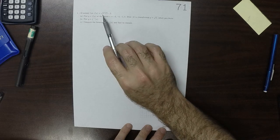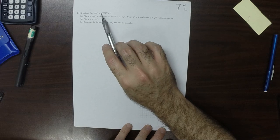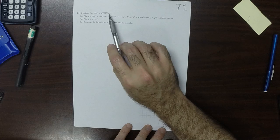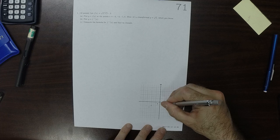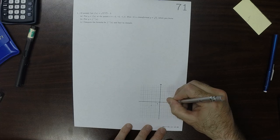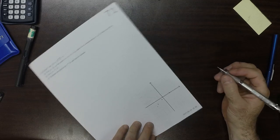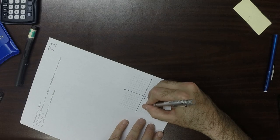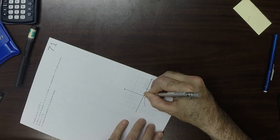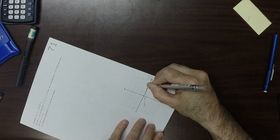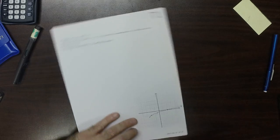If you plug in 4, 4 plus 5 is 9. And square root of 9 is 3, minus 3 is 0. So you plug in 4, so here. The function does something like that.